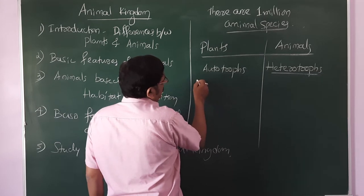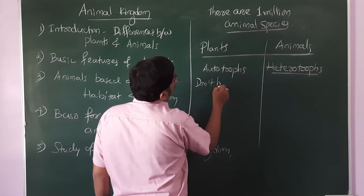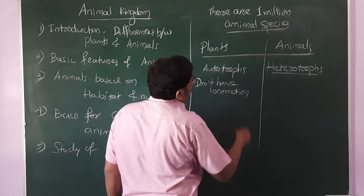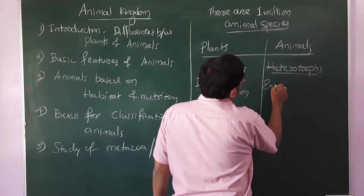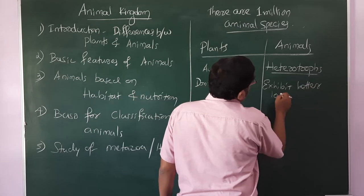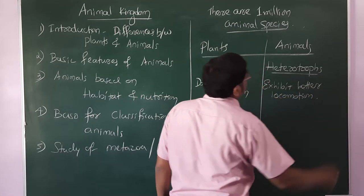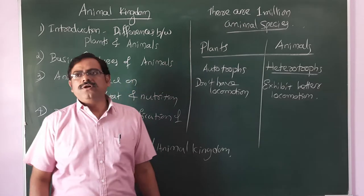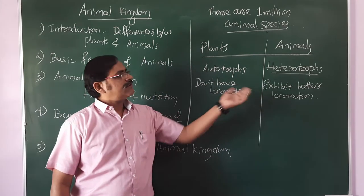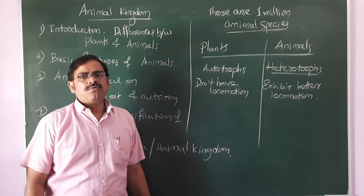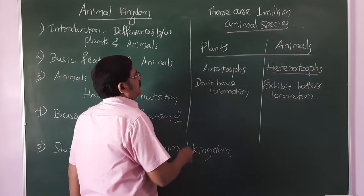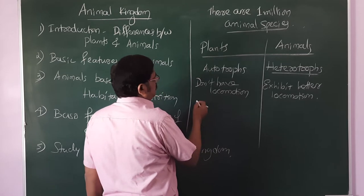Plants mainly don't have locomotion, whereas animals exhibit better locomotion. There are certain animals that won't move at all — such as sponges — those are exceptional cases, but most animals are highly locomotive.